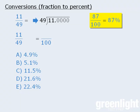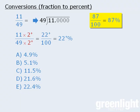If we multiply 49 by 2, we get 98, which is very close to 100. So to get exactly 100, we must multiply 49 by a number a little bit bigger than 2. If we multiply the denominator by a number a little bit bigger than 2, we must also multiply the numerator by a number a little bit bigger than 2. This gives us a number a little bit bigger than 22, so when we convert this fraction to a percent, we get a number a little bit bigger than 22%. Checking the answer choices, only one answer is a little bit bigger than 22, so the answer must be E.